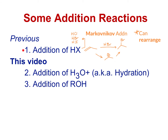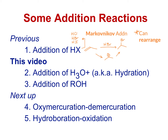That was reaction one of this section. We're going to do reaction types two and three today. We're going to talk about the addition of water with an acid, abbreviated H3O+, and also the addition of alcohols with an acid catalyst. These are really similar to HX. After this, we'll talk about some other reactions that are a little different — they don't have a carbocation, so we'll get differences in whether they can rearrange and in the regiochemistry, whether the product is Markovnikov or anti-Markovnikov.